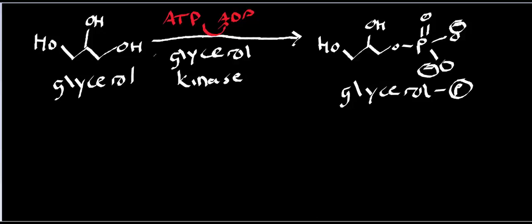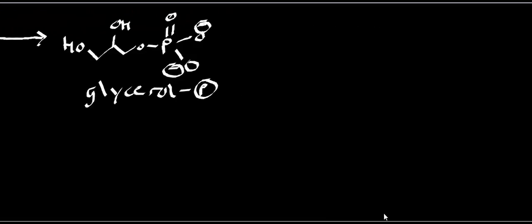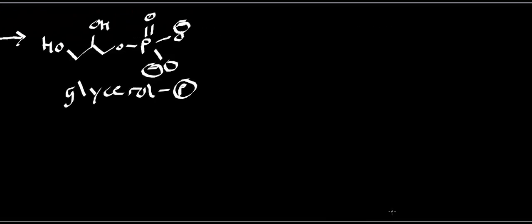Glycerol phosphate is going to be consumed by another enzyme, and this enzyme is a reversible reaction. But in the direction that it normally runs, it's going to generate an NADH and it's going to generate something that you've seen before.